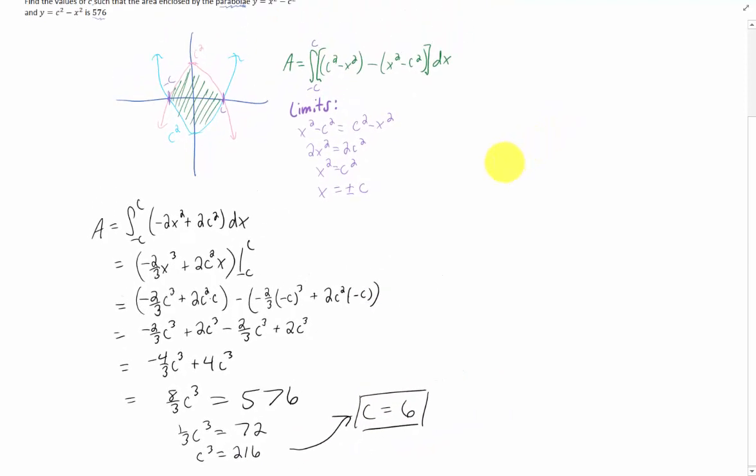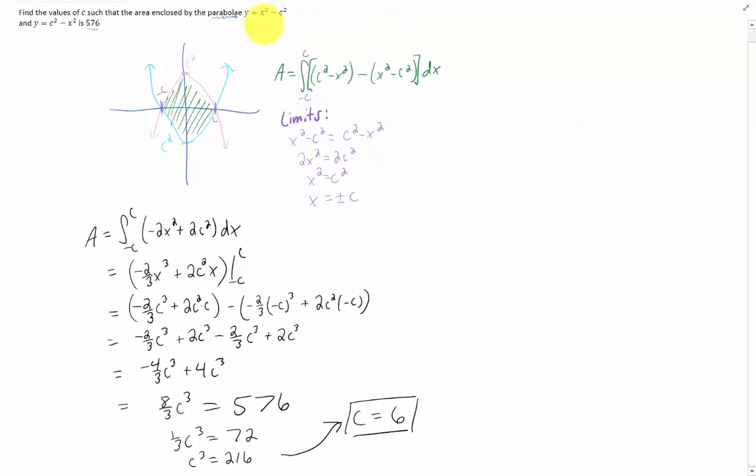In other words, if we look back at the original problem, if we had the parabola X squared minus 36 and 36 minus X squared, and we found the area between those two parabolas, that area would be 576 apparently. And okay, I guess we need to tack this on at the end.